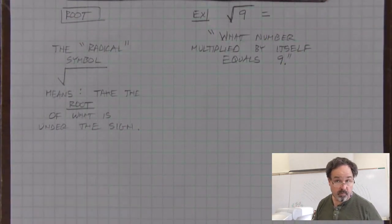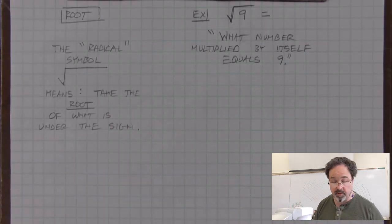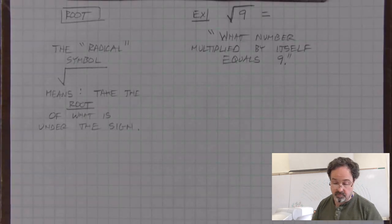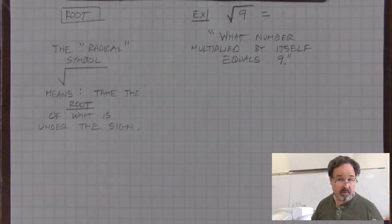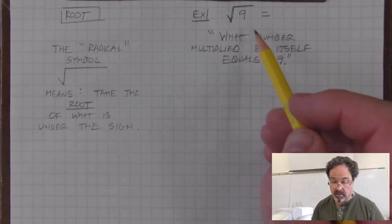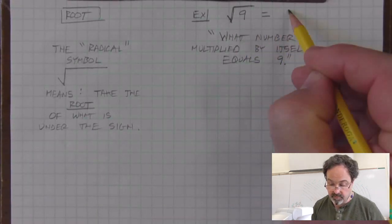We can find the root of 9 by thinking what number times itself equals 9. We can guess and check with a calculator, or we might know that 3 multiplied by itself is equal to 9. So the root of 9 is equal to 3.